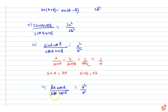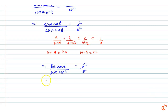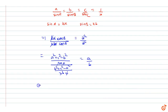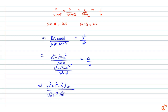Now substituting cosine rule values: cos(B) = (a² + c² - b²)/(2ac) and cos(A) = (b² + c² - a²)/(2bc). After substituting, c and 2 cancel out, giving us: a/b · (a² + c² - b²) / (b² + c² - a²) · (b/a) = a/b.